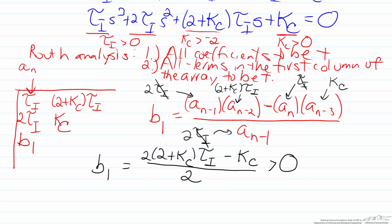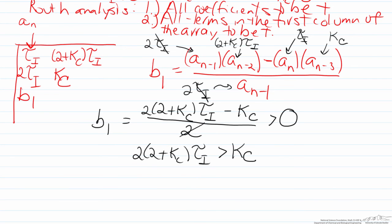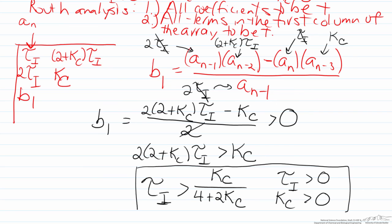What this leaves us with is that B1 is going to equal two times two plus Kc times tau I minus Kc all over two. In order for this process to be stable this value must be greater than zero. What we note here unsurprisingly based on our earlier discussion is that the values of Kc and tau I are coupled. We will get rid of the two because if we move it over to the right hand side it will go to zero. We are left with two times two plus Kc times tau I is greater than Kc. If I divide to isolate tau I I show that tau I must be greater than Kc over four plus two Kc. This makes sense because tau I in order for it to be stable has to be larger than particular values. We bring back our original criteria from our analysis of the constants and we get our stability range here.